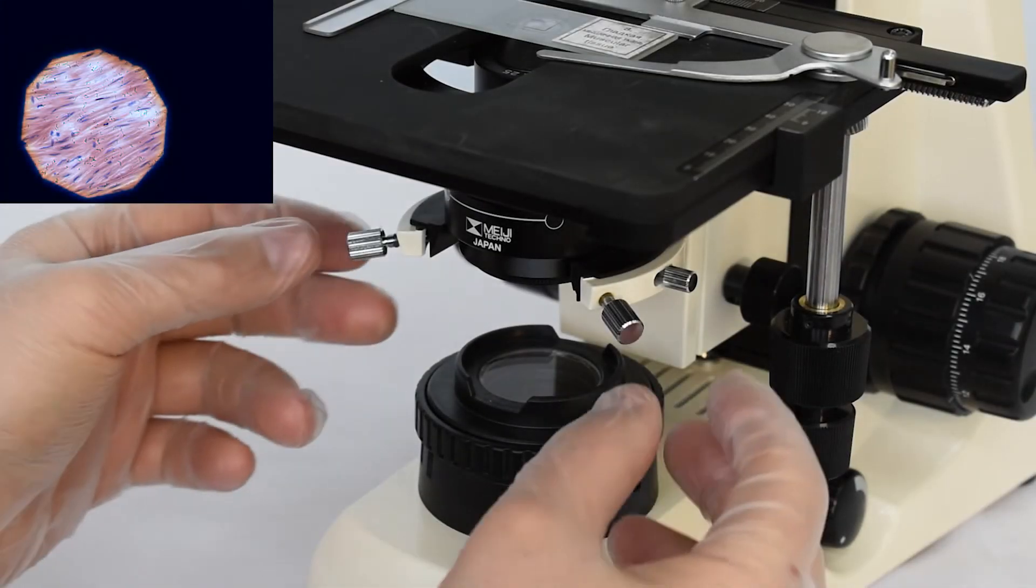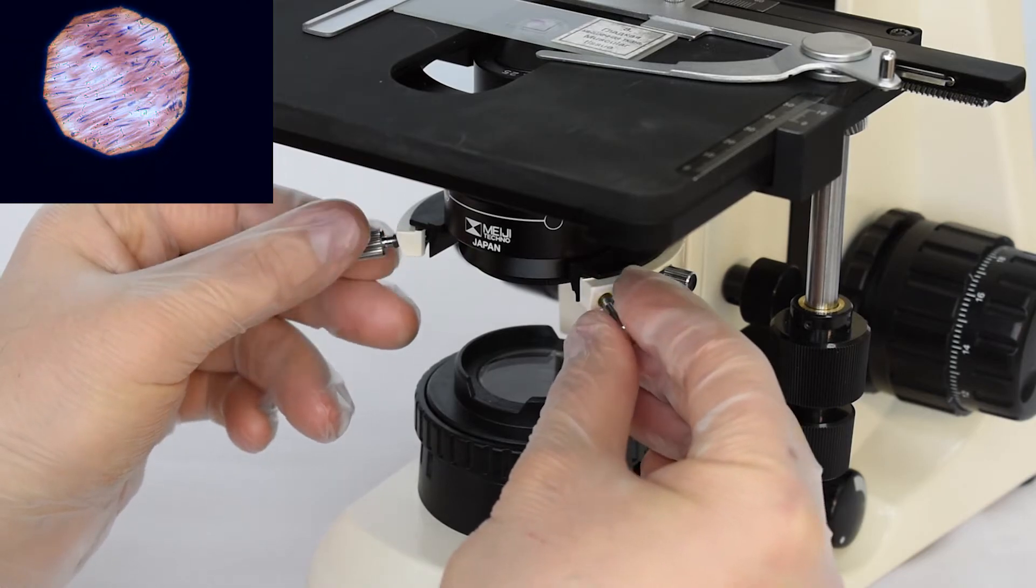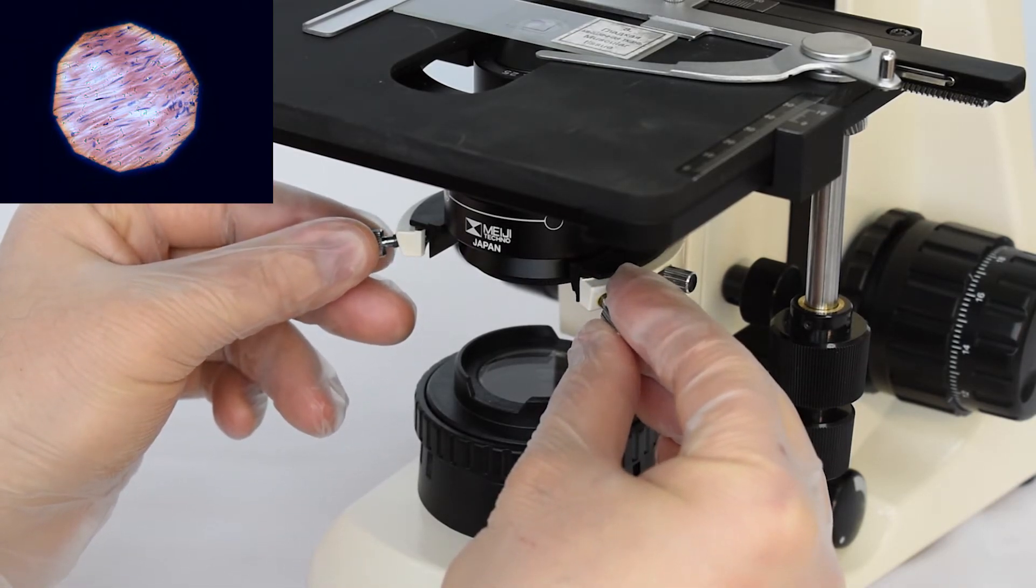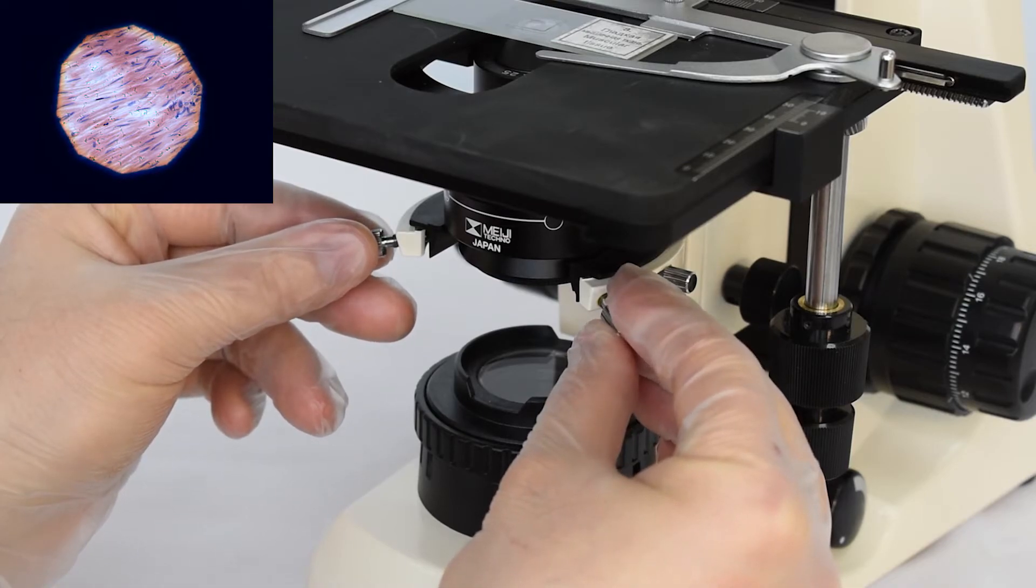Condenser is centered using two screws. Turning these screws place the polyhedron of the field diaphragm in the center of the field of view.